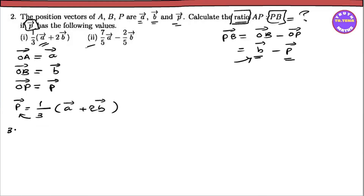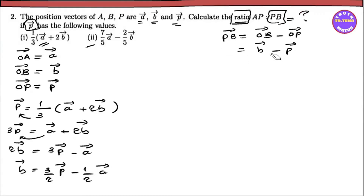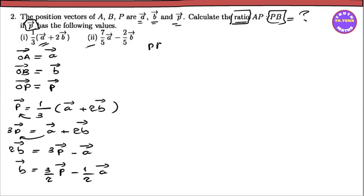3b vector is equal to a vector plus 2b vector. So 2b vector equals 3b vector. If you write small a vector, you write negative a vector. So small b vector equals negative 1b vector.